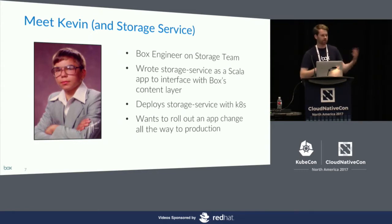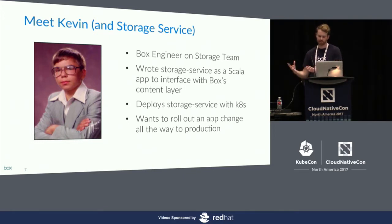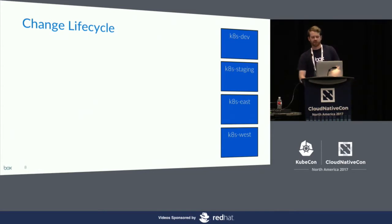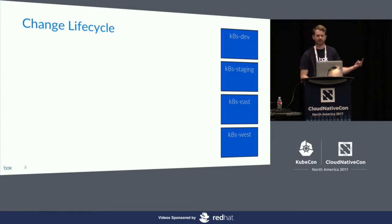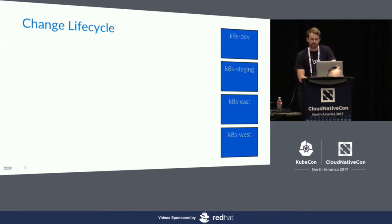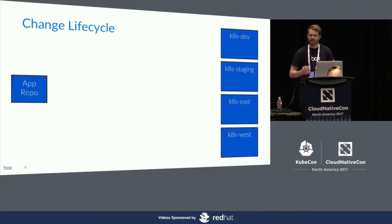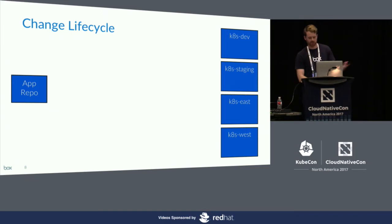Let me give a quick look at what our whole change lifecycle looks like. I'll breeze through this big diagram first and then go through each component in depth. We have a dev cluster, a staging cluster, and two production clusters, east and west. We want there to be one minimal manual entry point for Kevin to roll out his changes — that entry point is his app repo, where his source code, Dockerfile, and other config live. When Kevin makes a commit to that app repo and pushes it, it kicks off a git hook that triggers the start of a Jenkins pipeline.